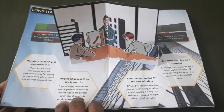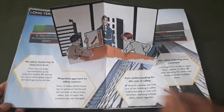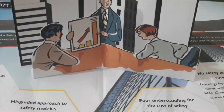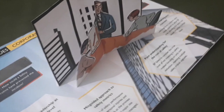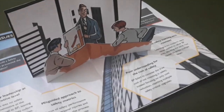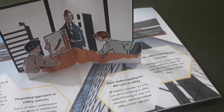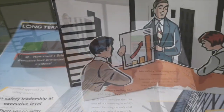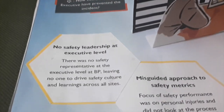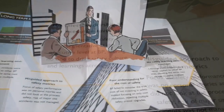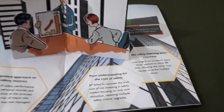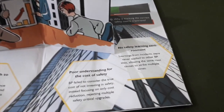The second page shows the long-term failures at the corporate level. The pop-up is a reference to the environment where the decisions were made. The hexagonal boxes describe the root causes that resulted from corporate-level decisions.